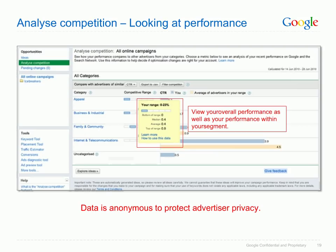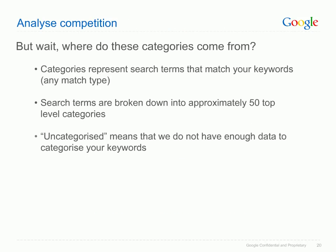Data is kept anonymous to protect advertiser privacy — the number you're benchmarked against is an average of all advertisers in that range. All this data is also available at the subcategory level. Categories represent search terms that match an advertiser's keywords, broken down into approximately 50 top-level categories and approximately 7,000 categories in total including subcategories. If you see 'uncategorised' in your account, it means we do not have enough data to categorise your keywords.